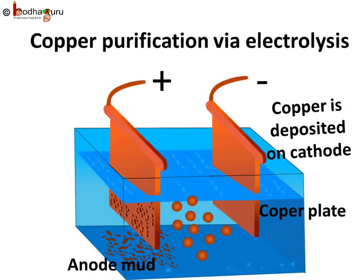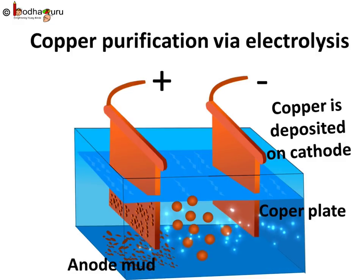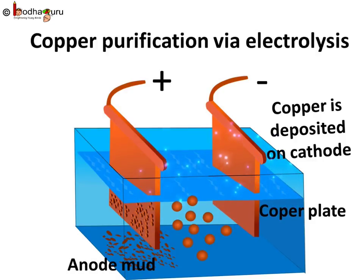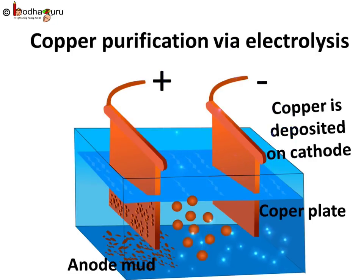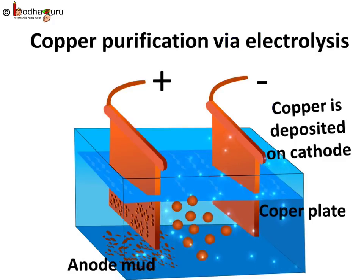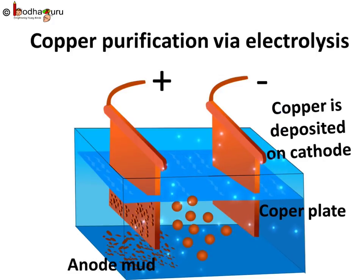Electrolysis can also be useful in order to purify crude metals. In this case, impure metal is used as the anode and pure metal is used as the cathode. The required metal gets deposited on the cathode in pure form. This process is used for the purification of copper, zinc, etc.